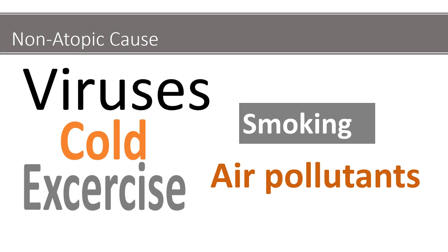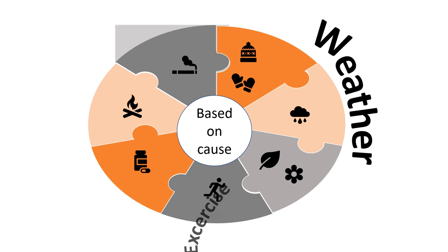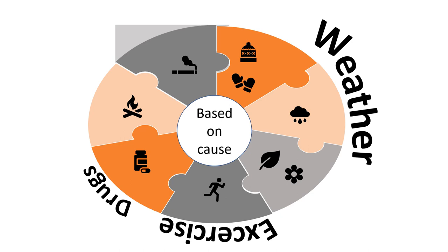Various triggers for non-atopic asthma are viruses, cold, exercise, smoking, and air pollutants. Another way to classify asthma is based on cause. The cause can be weather - either in winter season, rainy season, or due to excessive pollens during spring season. It can be due to exercise, drugs, occupation, as well as pollution.